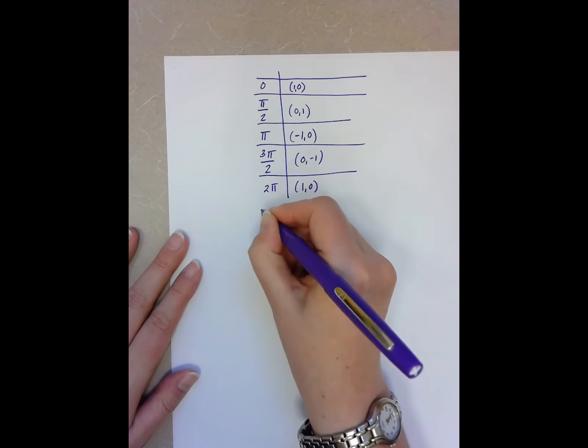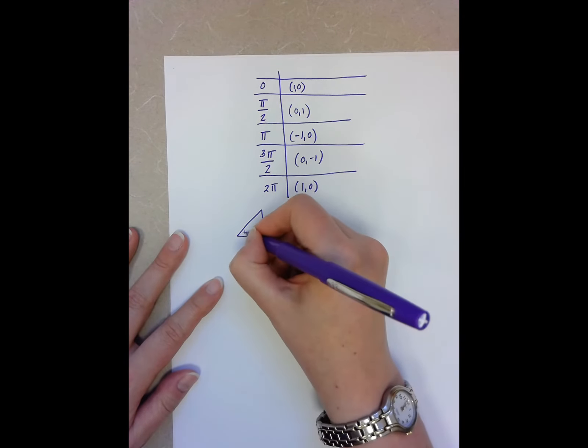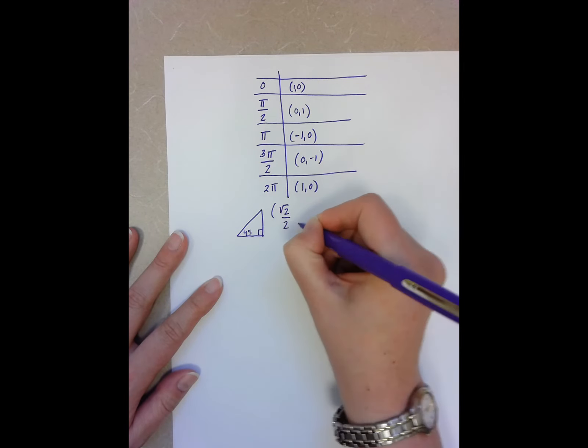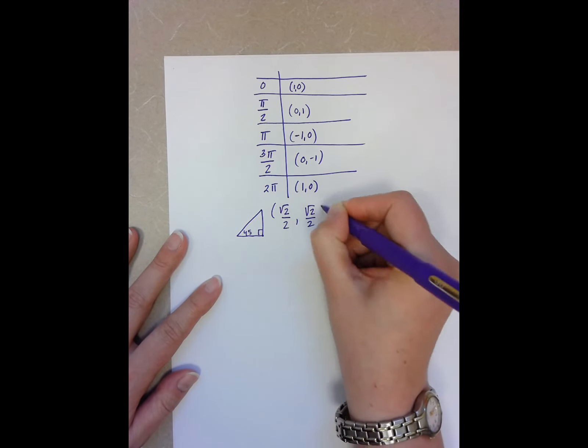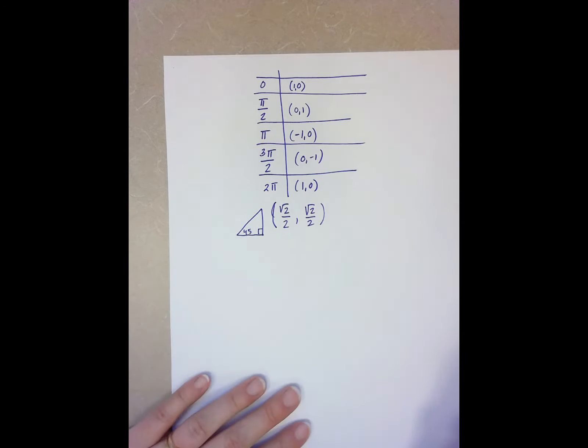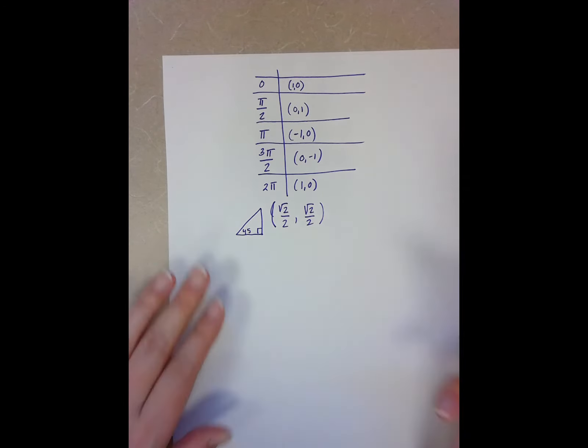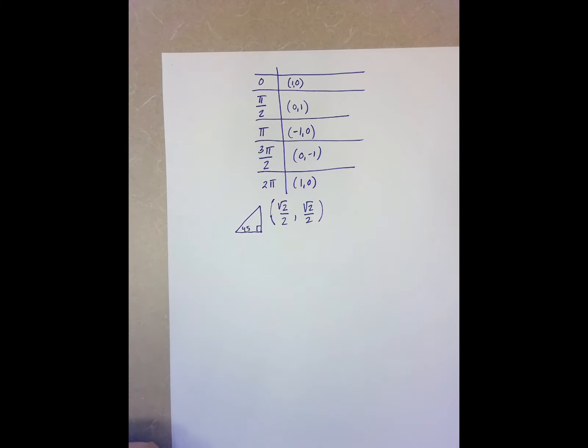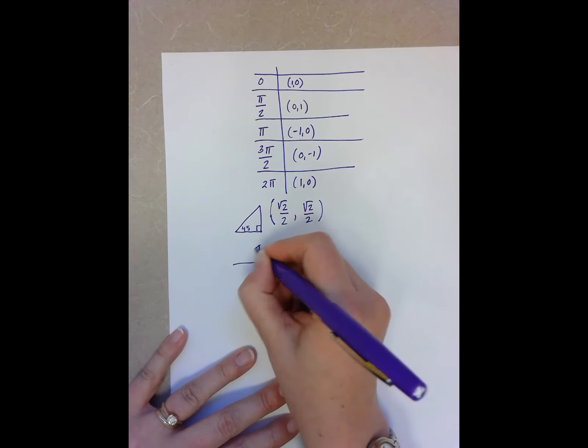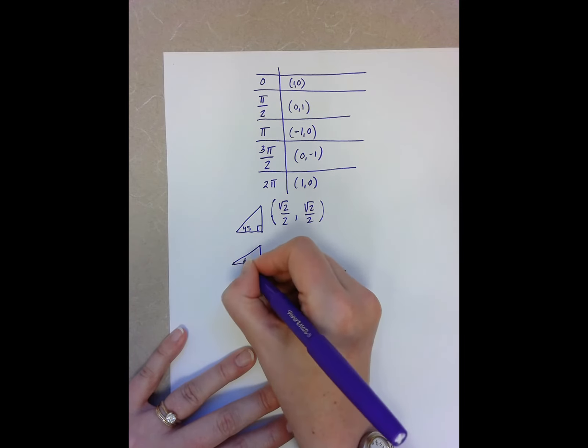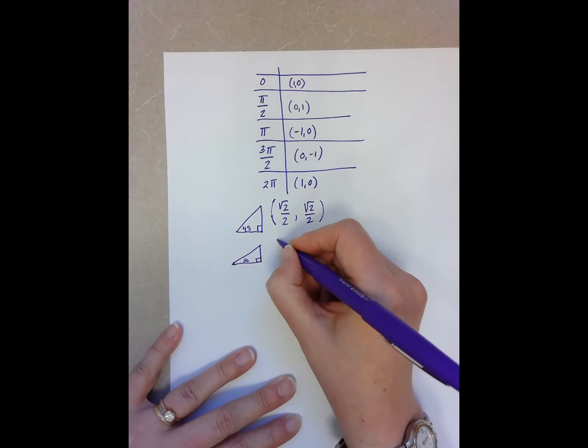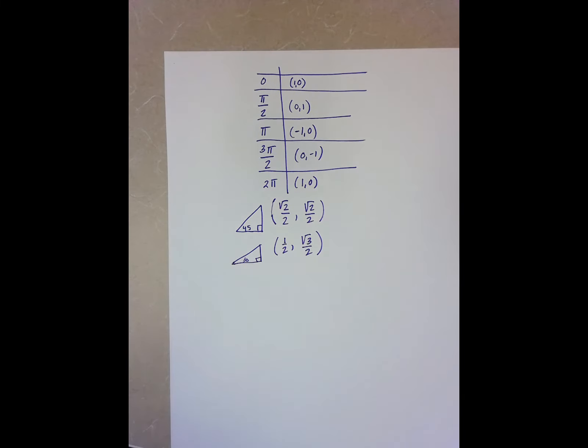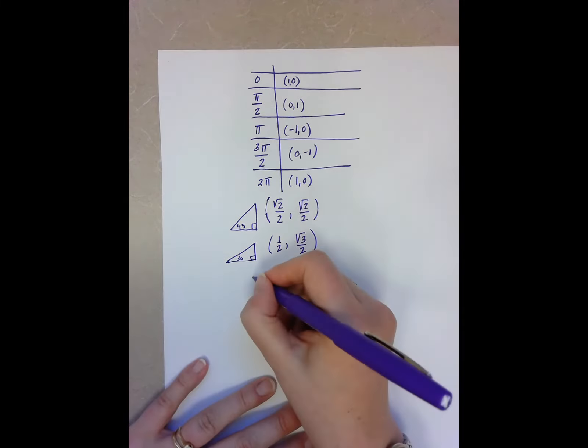For my 45, 45, I always have this point being some combination of root 2 over 2, as long as I pay attention to whether or not my signs are positive or negative depending upon which quadrant I'm in. For my 30 triangle, this is always going to be 1 half root 3 over 2. And again, I'll have to change positive or negative depending upon the quadrant.